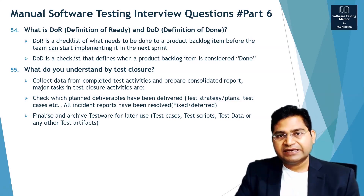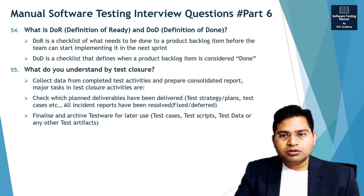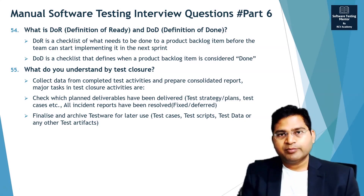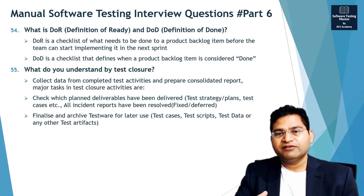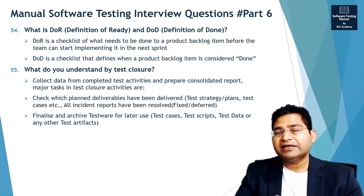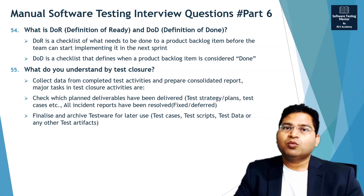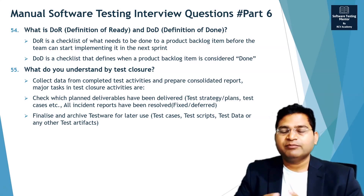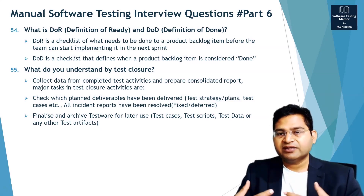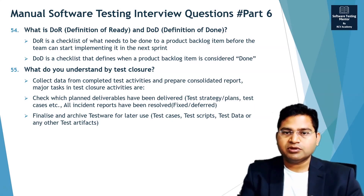So once you have created the test summary report — the test closure report — you also not only just prepare that report, you also ensure that all the planned deliverables have been delivered. So what all deliverables were there committed — test strategy, plan, test cases, etc. — what has been delivered, what all incidents or defects have been reported, how many of them fixed and resolved. So all of this becomes part of the TSR, test summary report, or test closure report.